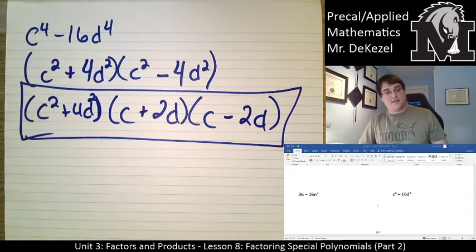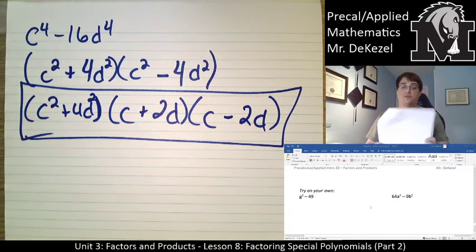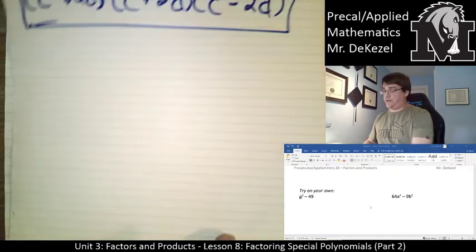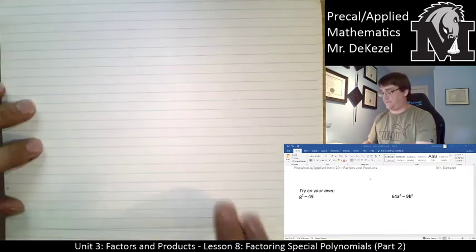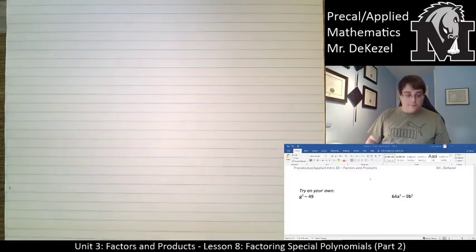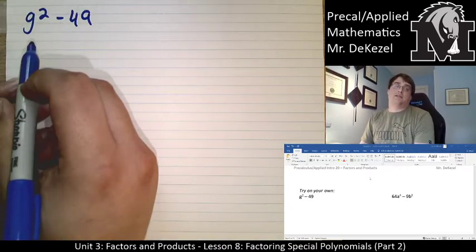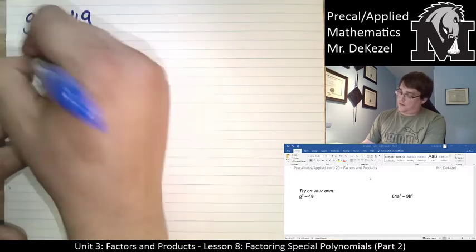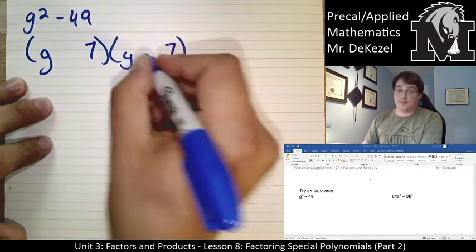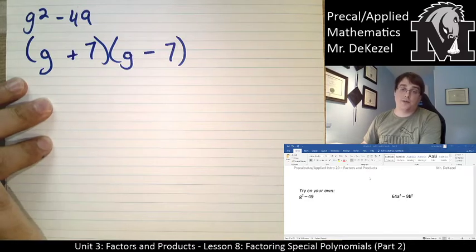We've got a couple of try-on-your-own problems. Pause the video and come back when you're done. Alright, let's do g squared minus 49. Both terms can be square-rooted — we'd have g and g, 7 and 7. To add up to zero in the middle, one's positive and one's negative: (g + 7)(g - 7). That's as far as we can go.